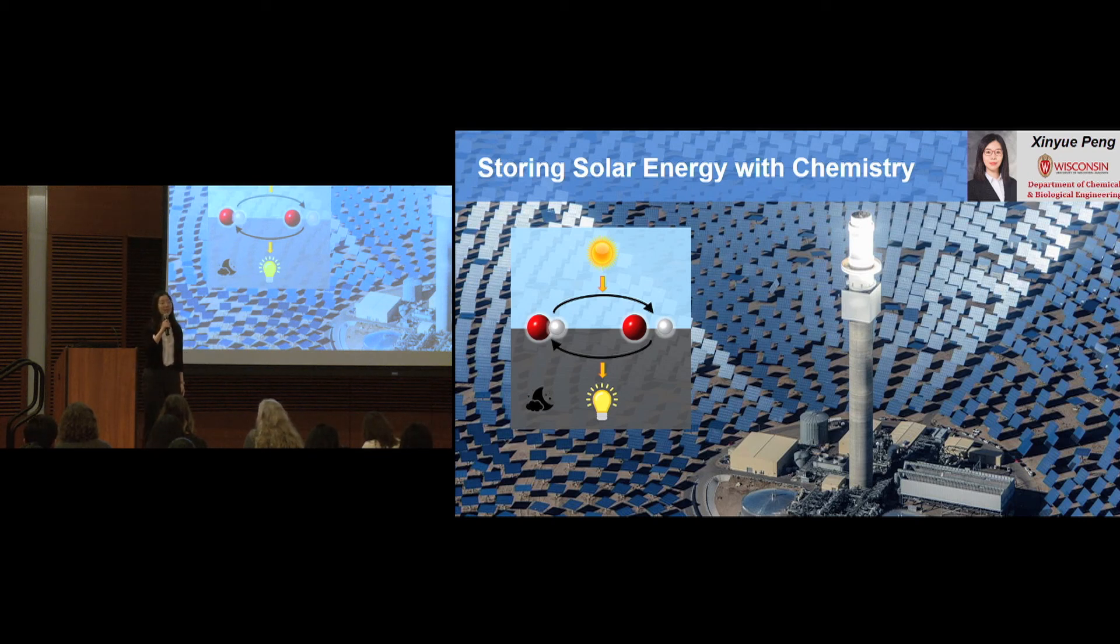As a chemical engineer, I'm working on storing solar energy in chemical bonds. We are looking for a special type of molecules. When they are exposed to sunlight, their chemical bonds are broken by absorbing energy from the sun. We can then store and transport these separate parts.